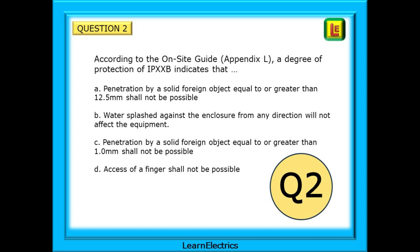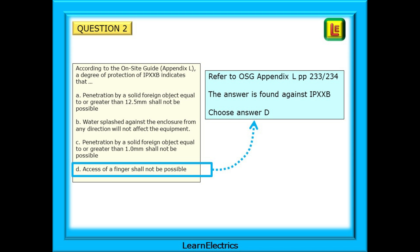The answer to question 2 will be found in the on-site guide. The question is: according to the on-site guide Appendix L, a degree of protection of IPXXB indicates what? We should refer to Appendix L of the on-site guide on pages 233 and 234 — just the two pages. Looking down the list of IP numbers we will find IPXXB and the wording: access of a finger shall not be possible. So we should choose answer D.